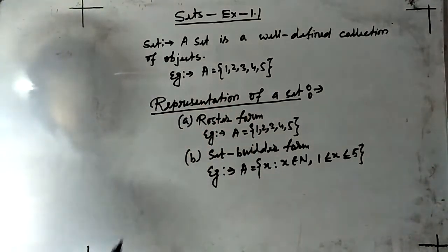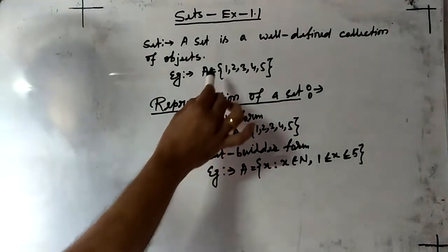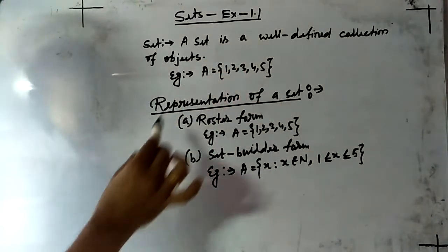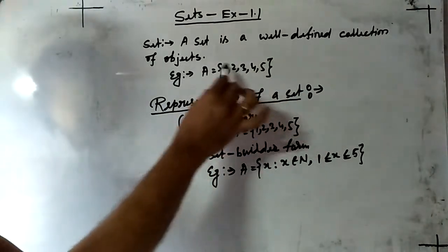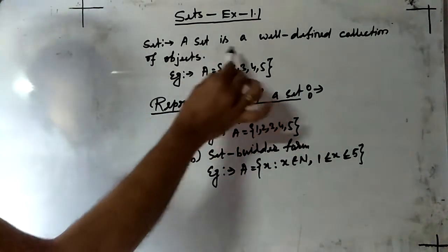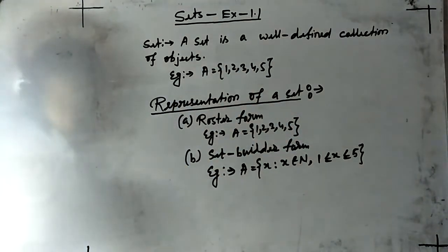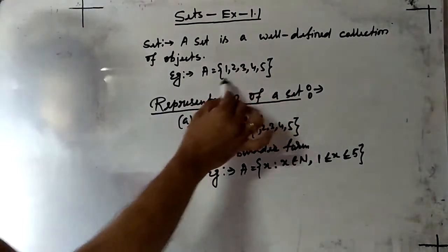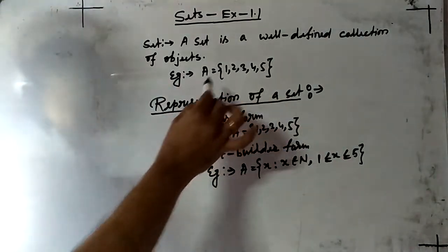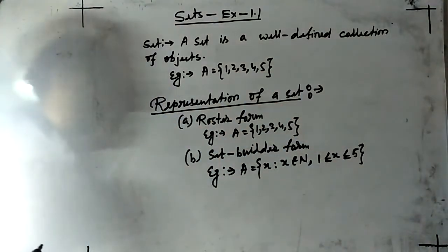Like if you are collecting first five natural numbers, here 1, 2, 3, 4, 5 I have collected and you will use curly brackets and write with the help of commas. Here collection is well-defined. If you will ask five students to collect five natural numbers, everyone will write same answer. That means collection is well-defined.